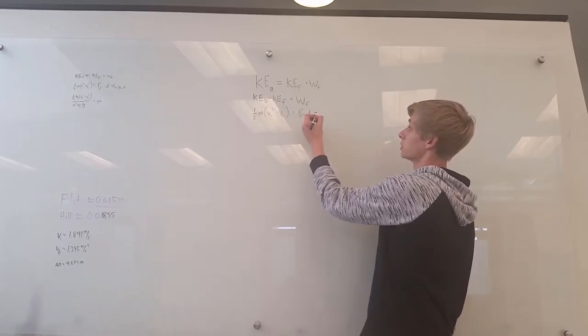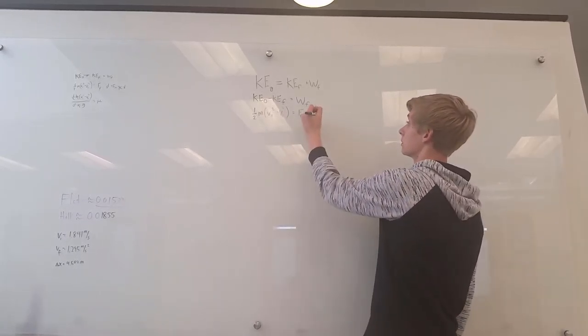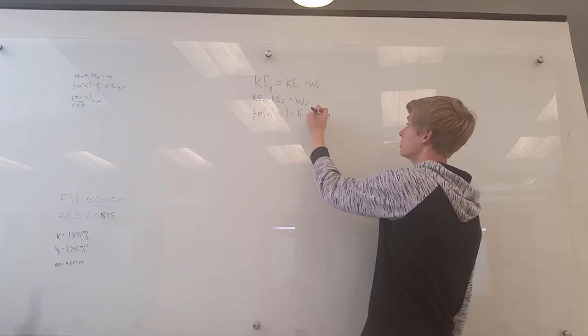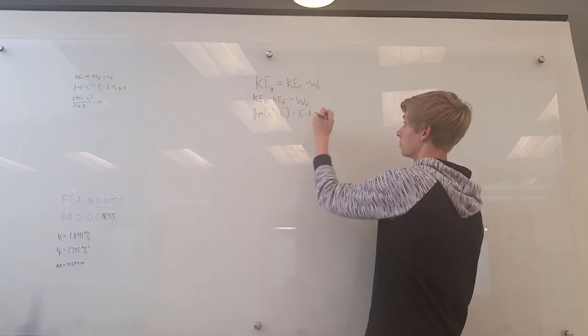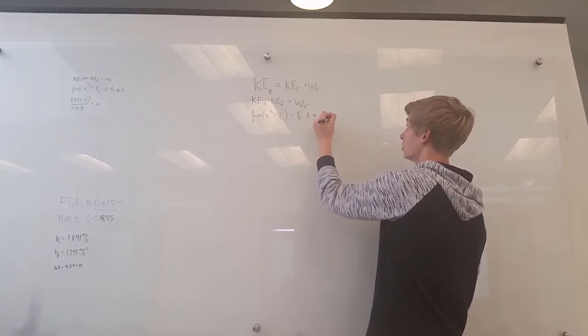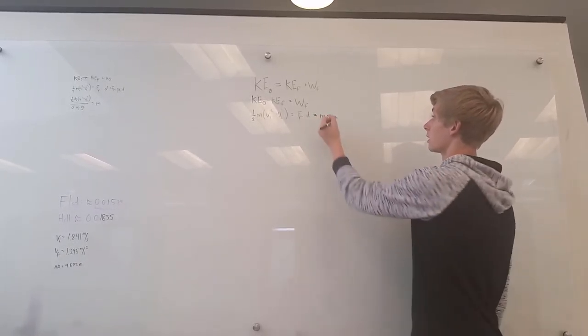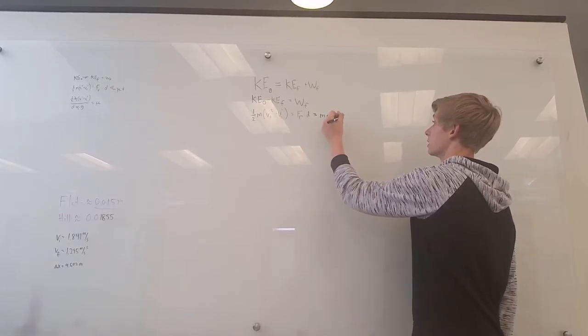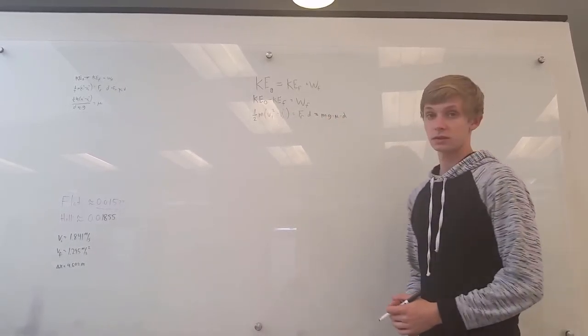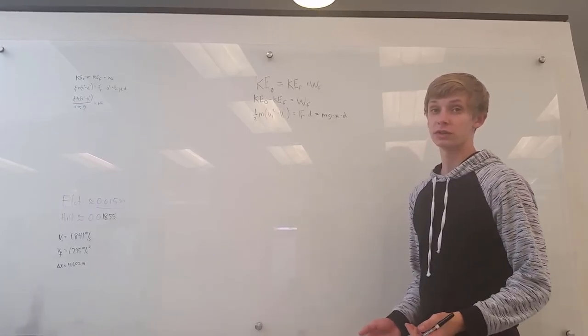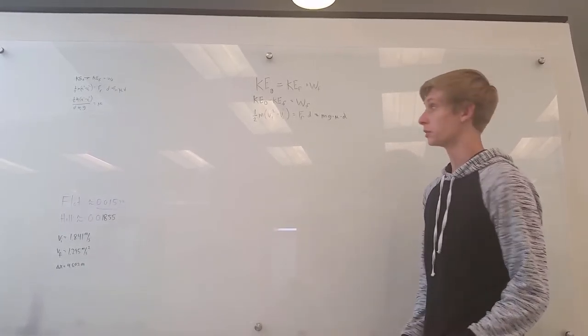So, we can say that this is equal to mg, which is normal force, times mu, which is what we're solving for, and then we find that. Now we're going to divide both sides of the equation by mgd in order to solve for mu.